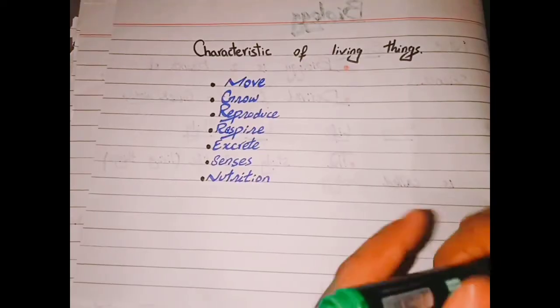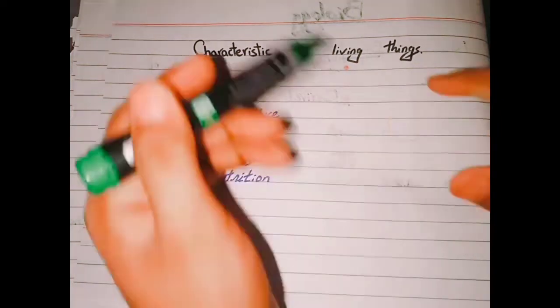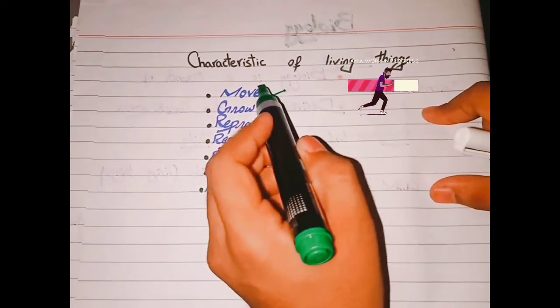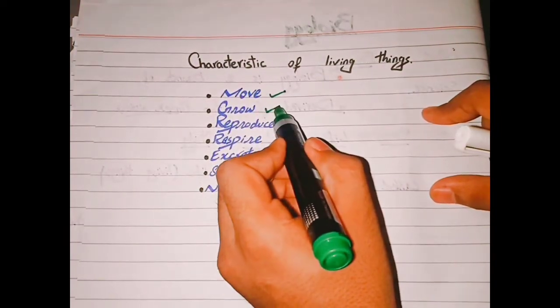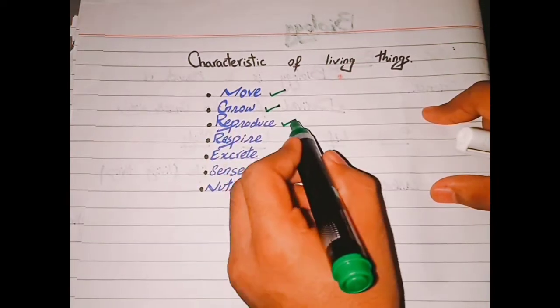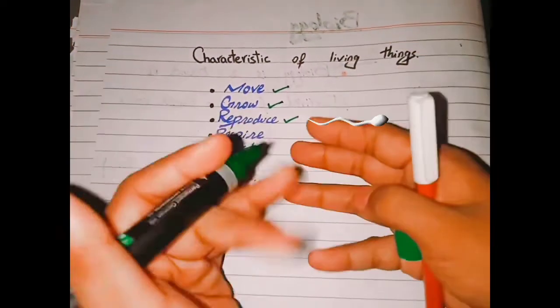If we look at the characteristics of living things, they are movable, they can grow, and reproduce like newborns.